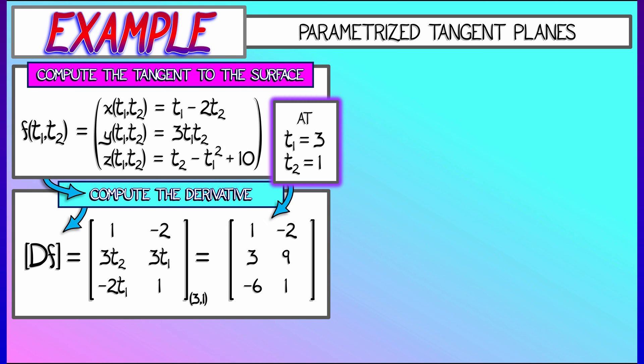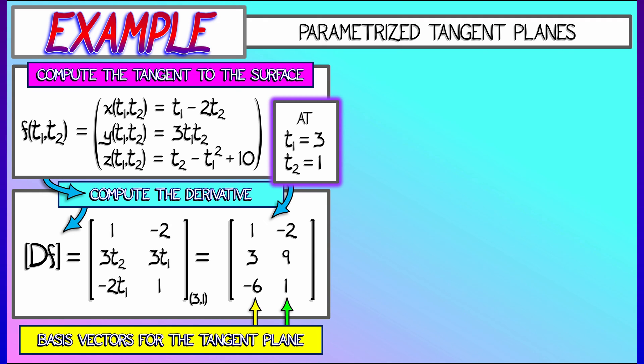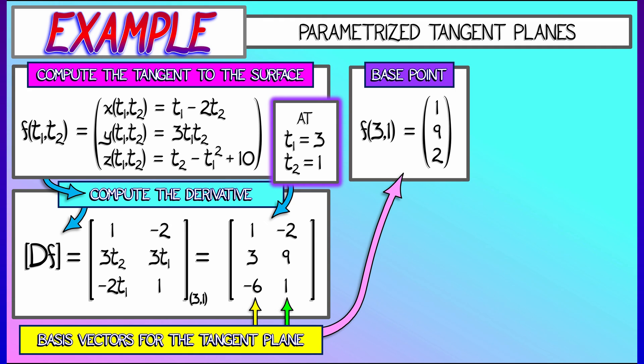Now, what base point is that? And how are we going to use this in that formula? Well, let's take t1 equals 3, t2 equals 1, substitute those into f. That gives us the base point 1, 9, 2. Those are the x, y, and z coordinates.